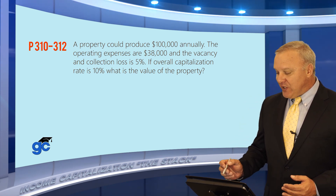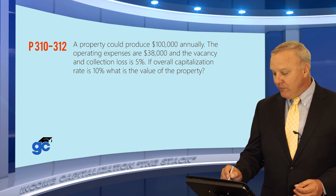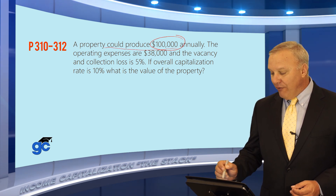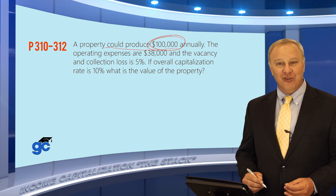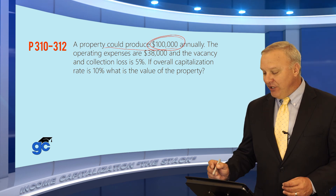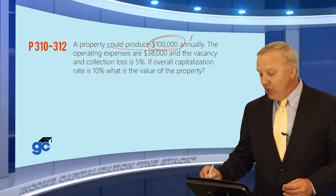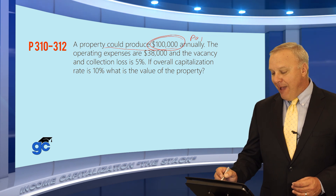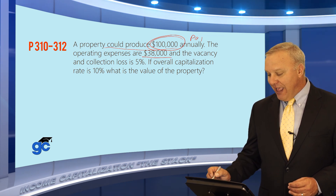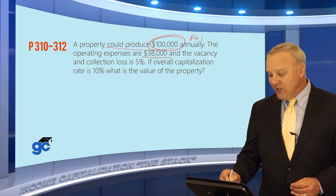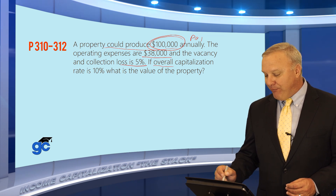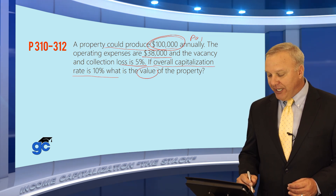Let's take a look at a question. This question says a property could produce $100,000 annually. That's typically going to be called the PGI, or potential gross income. The operating expenses are $38,000, vacancy and collection loss is 5%, and if the overall cap rate is 10%, what is the value of the property?